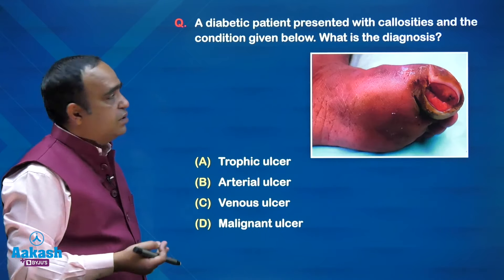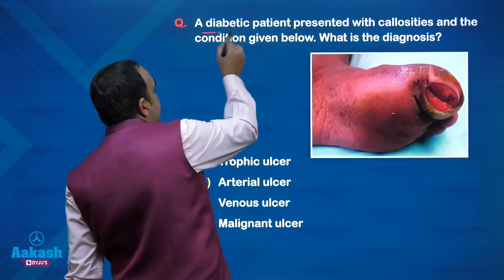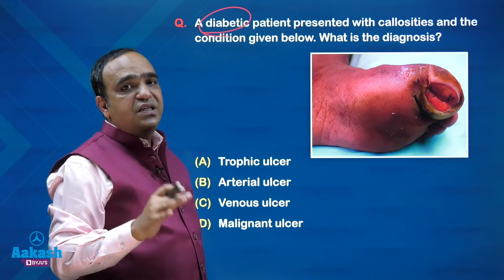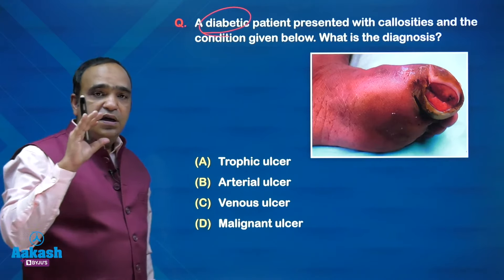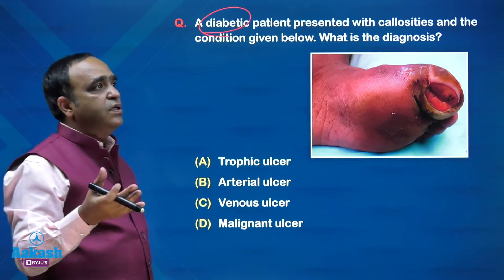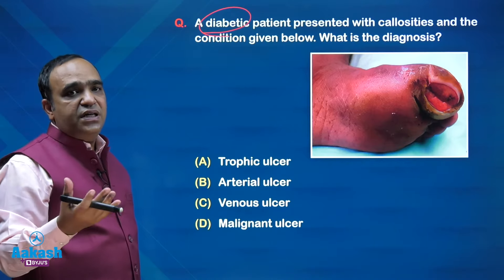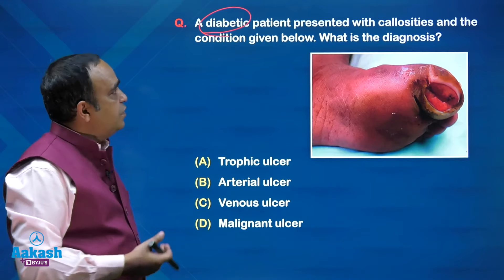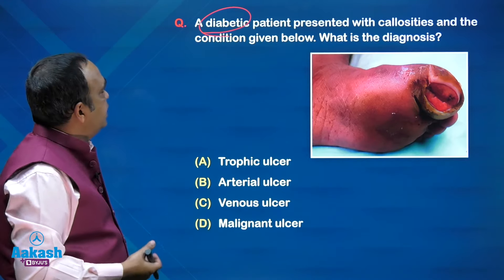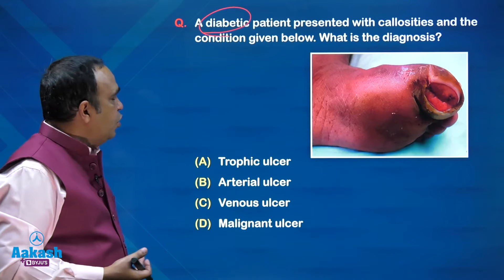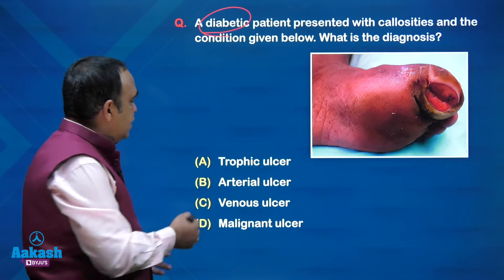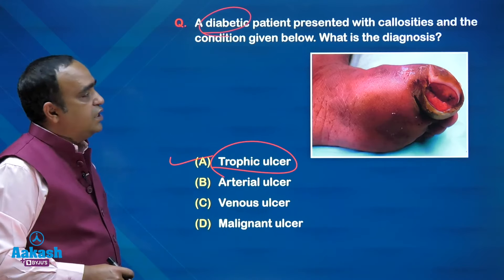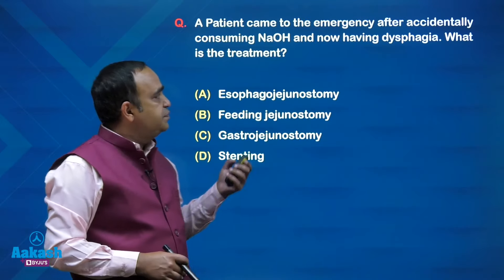A marked question on ulcers: a diabetic patient — the biggest clue. Common ulcers on the plantar surface of the foot in diabetics are pressure ulcers or trophic ulcers, presenting with callosities — a feature of diabetic neuropathy. The given condition is an ulcer on the great toe with punched-out margins — classically a trophic ulcer. Does not fit venous, arterial, or malignant ulcer.